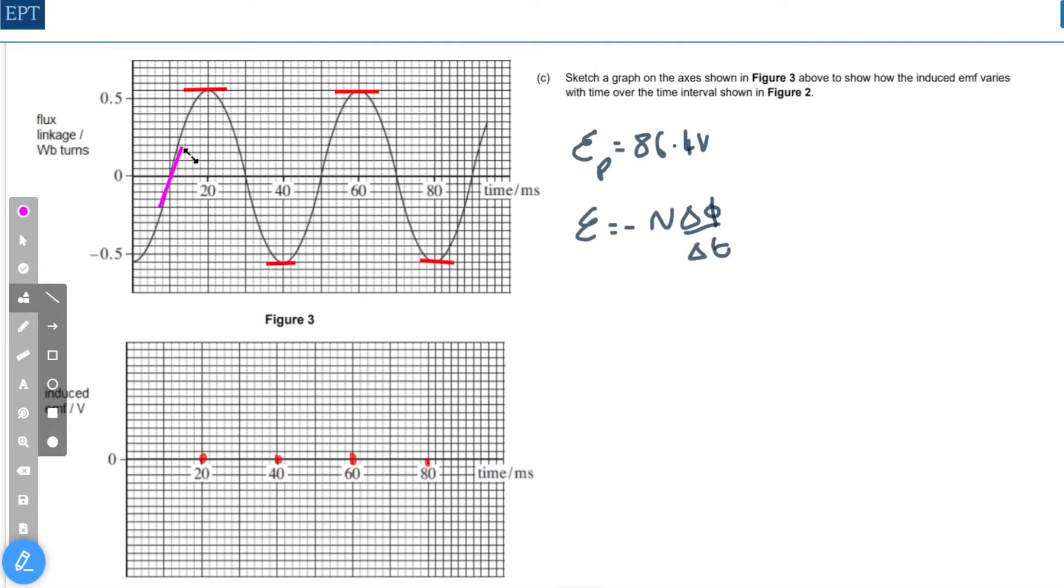And so we get maximum positive, maximum negative - so that's going up, that's going down, but we have to remember to multiply by the minus 1 from Lenz's law.